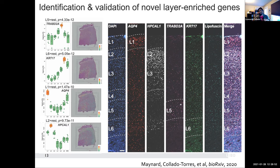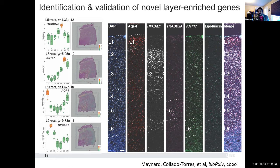Every new technology has different costs and labor associated with it. The Visium platform we're using is genome-wide, while the RNAscope platform is not — you have to choose specifically what genes you want to generate data from. You always have to mix and match the different technologies to make sure you can trust the new technology based on the older one that might not be as high-throughput or more time-consuming. That's what we've done here.